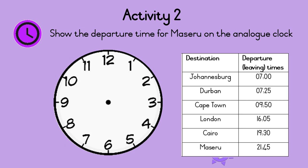Show the departure time for Maseru on the analog clock. Now it's your turn — do this now. Are you ready? The departure time for Maseru is quarter to 10 in the evening. So, the minute hand should point to 9 to show quarter to, and the hour hand should point to just before 10. Well done!